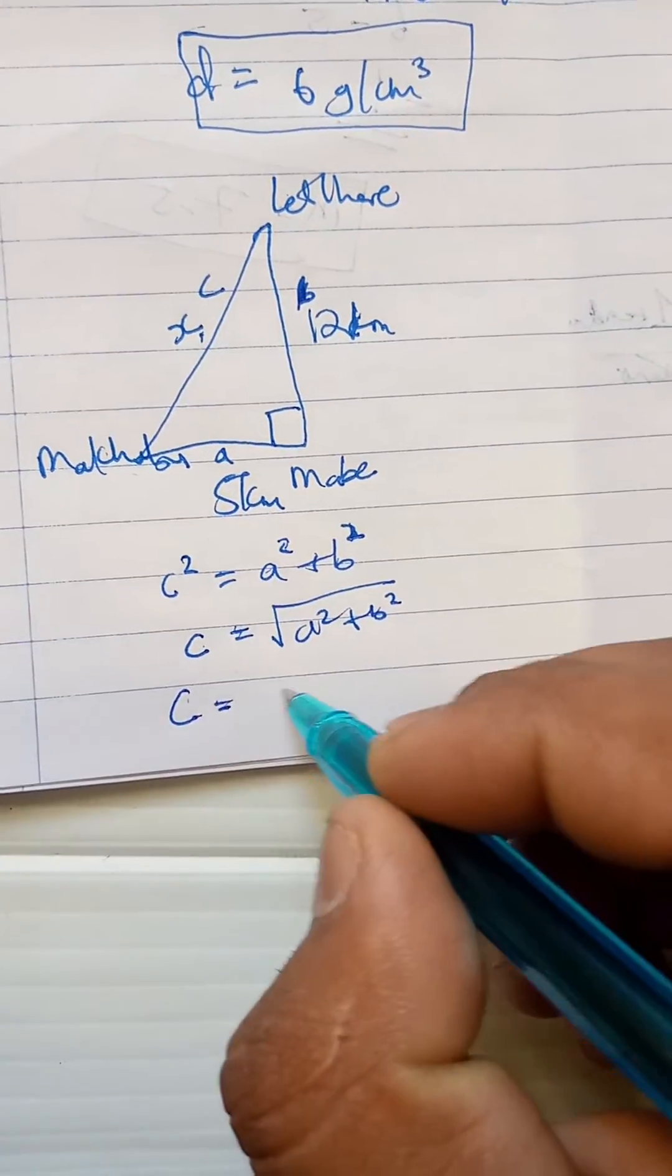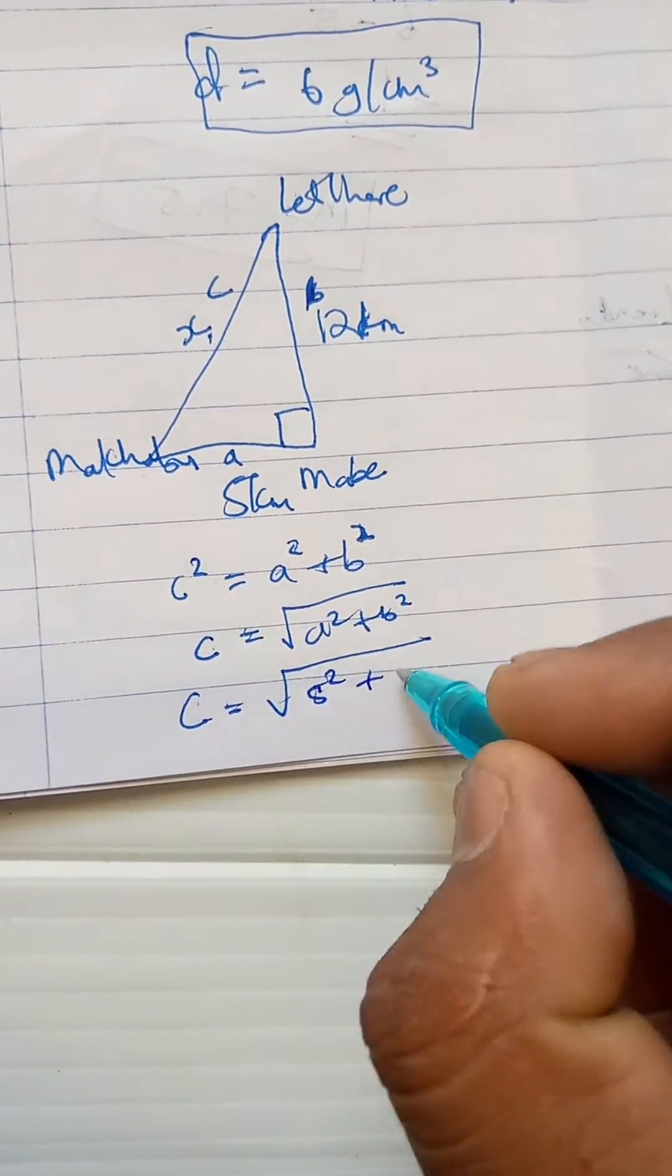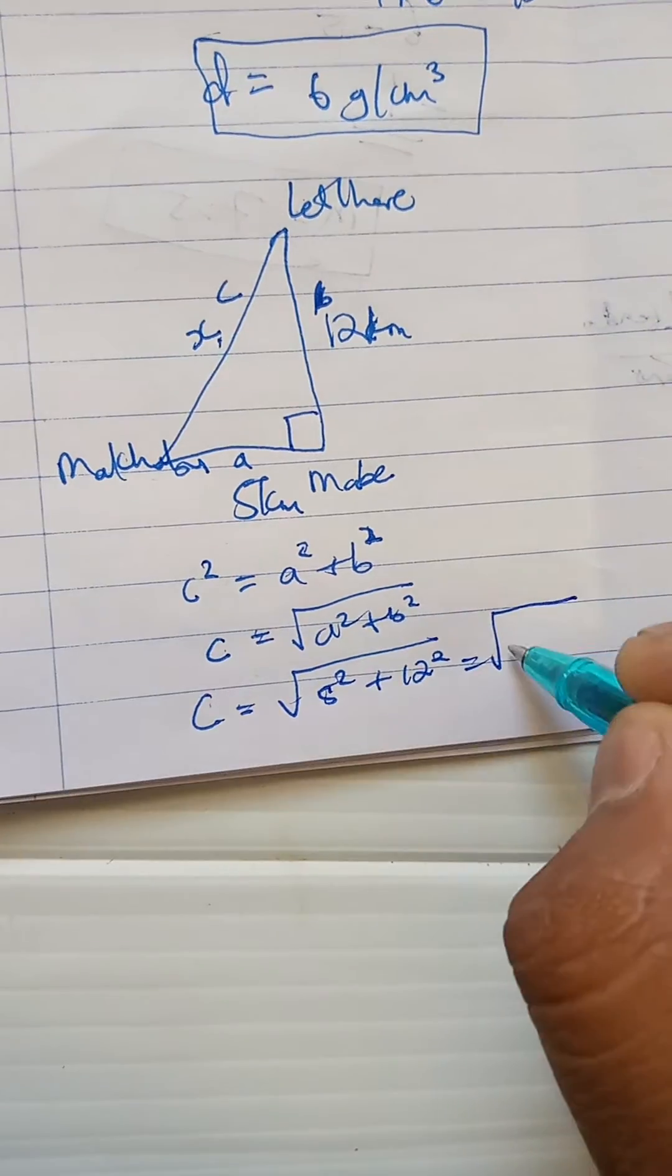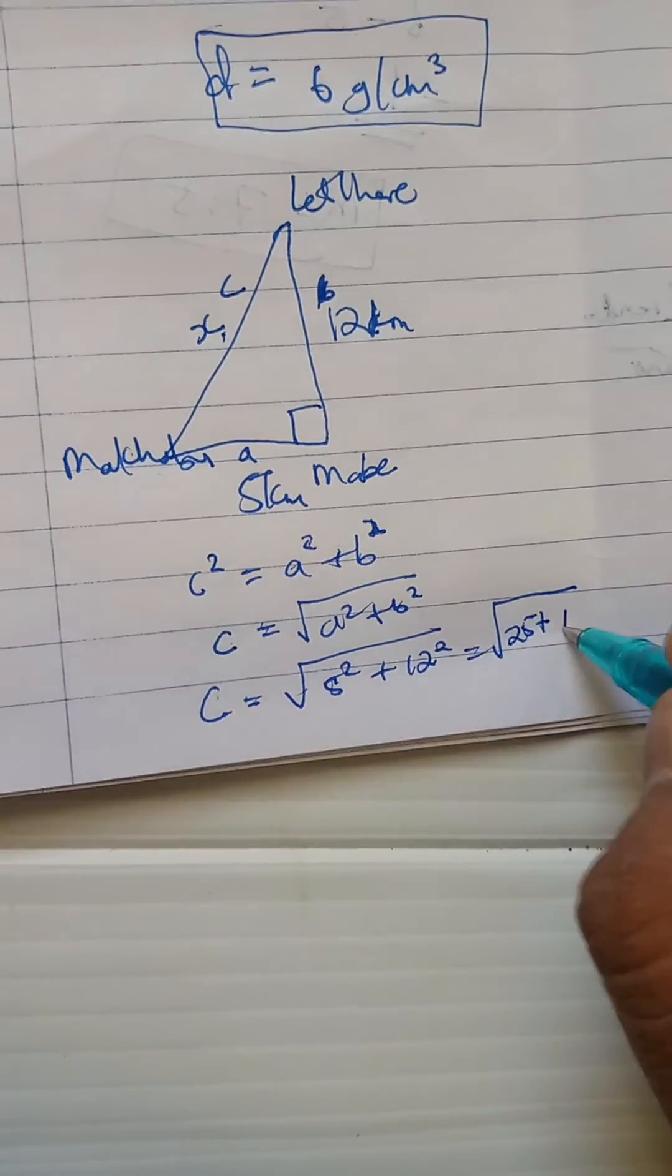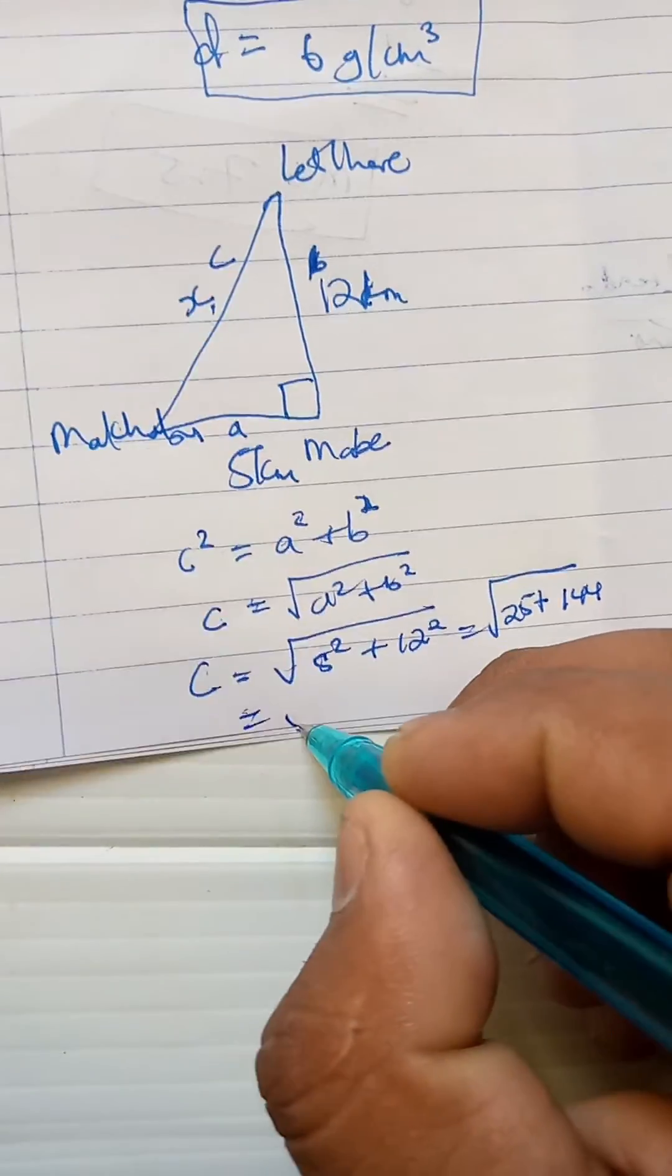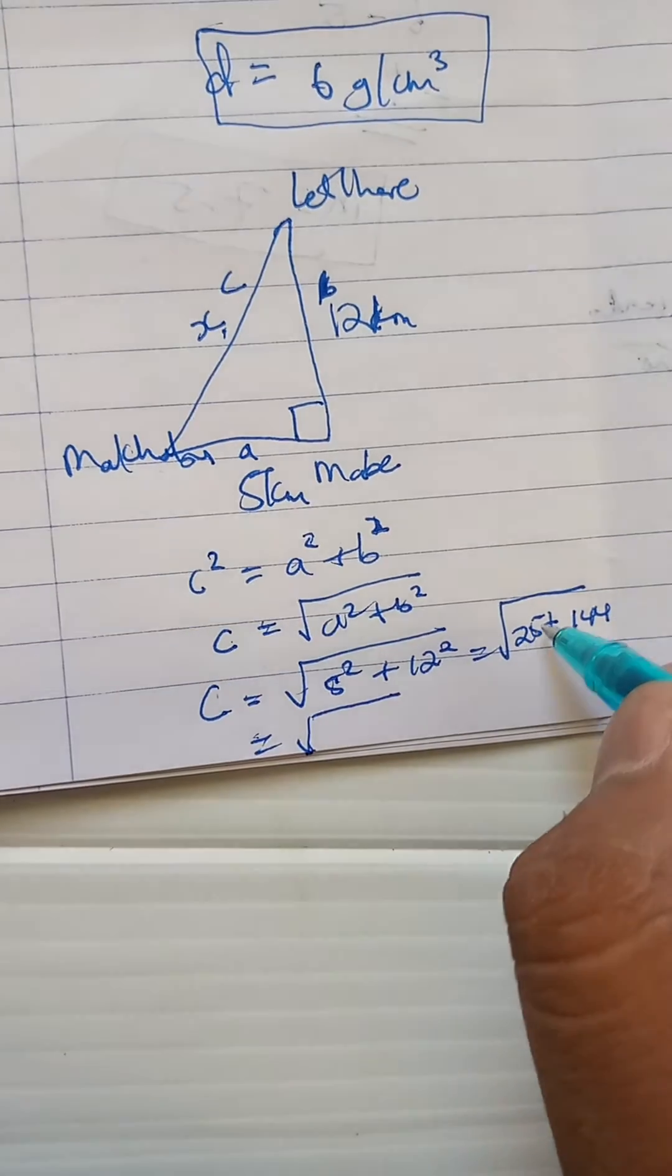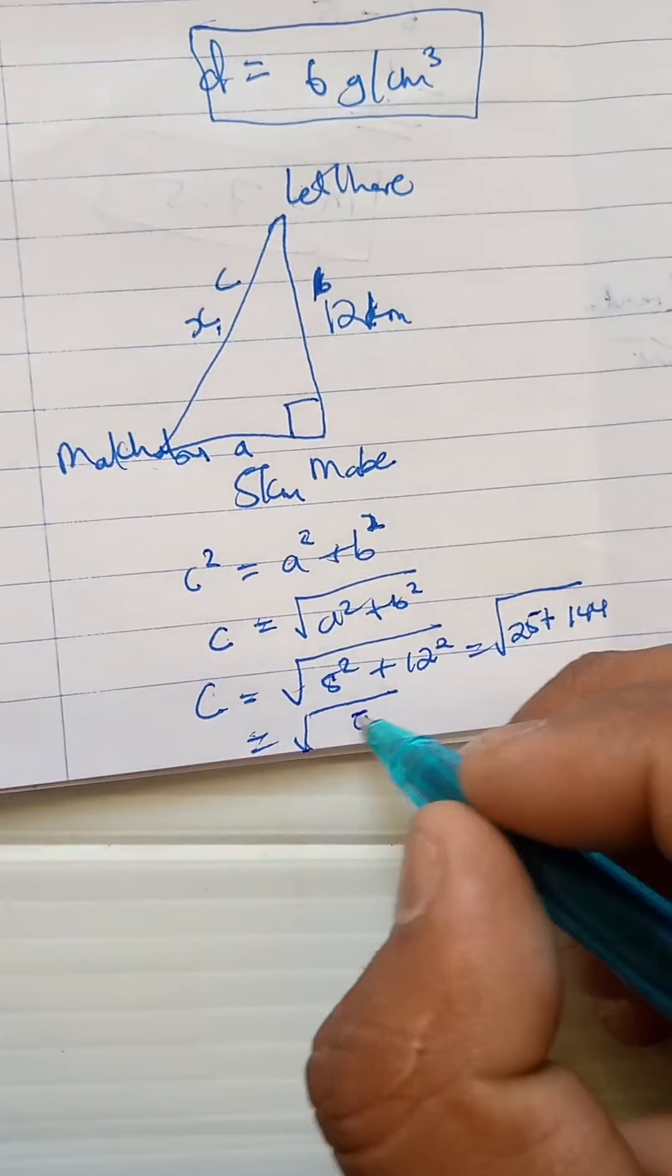We're going to substitute these numbers here. We're going to do 5² plus 12². That's going to be 25 plus 144, which equals 169.